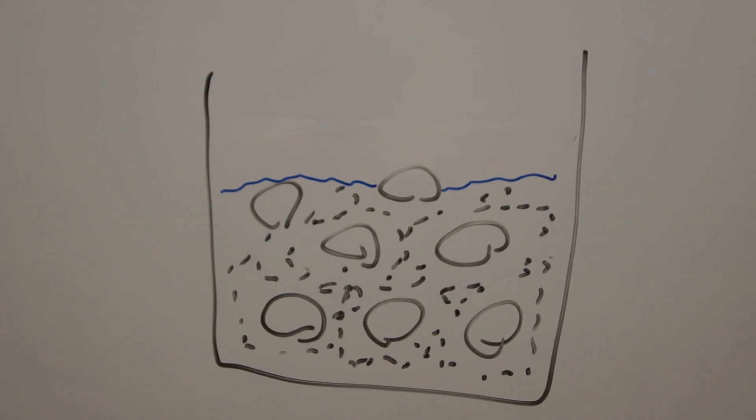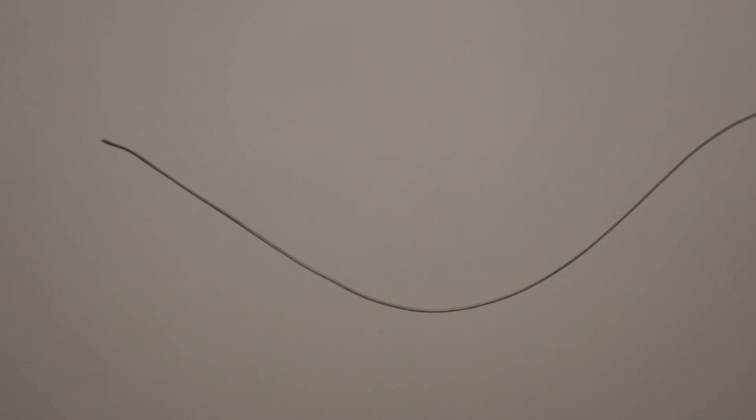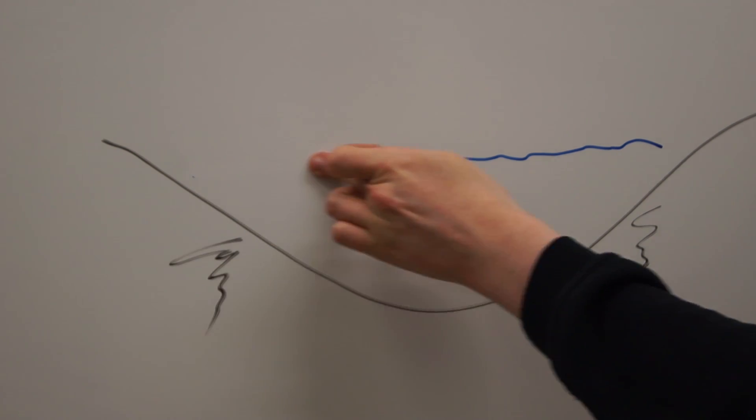But why would this happen? No one but an evil genius would do it on purpose, right? Don't be silly, it happens naturally. Quicksand is quite common, for example on the banks near the mouth of a river. Quicksand will form on the bottom of the river and when the tide is out the quicksand will surface.